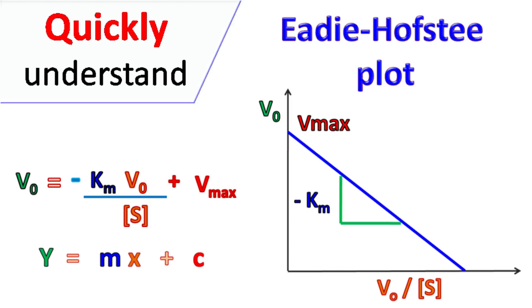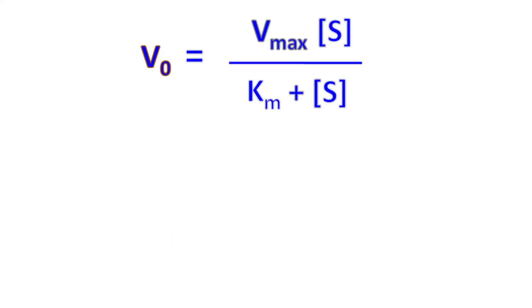Hey guys, QuickBikeMisterBasics here. Let's talk about Eadie-Hofstee Plot. The Michaelis-Menten equation for enzyme kinetics is V0 equals Vmax times S upon Km plus S.